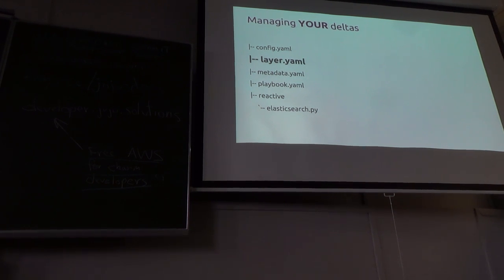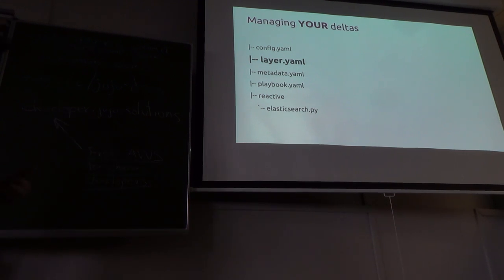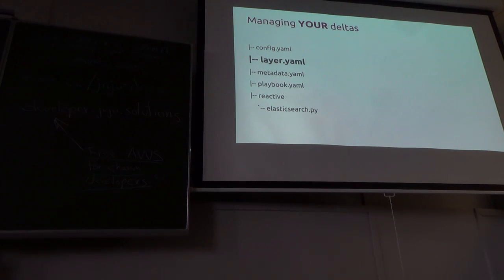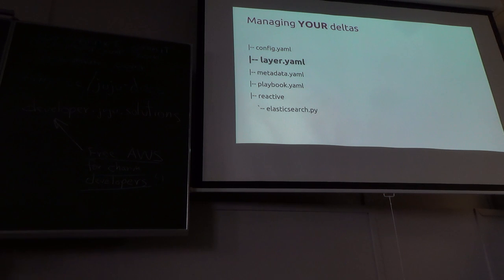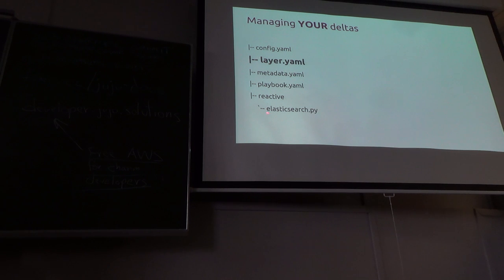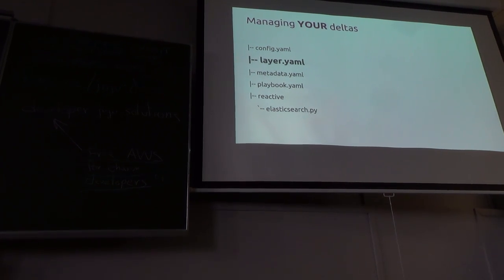Along the vein of managing your deltas, a layer is a fairly skinny directory structure comprised of just a few files. There's the layer.yaml, which defines where to pull in extra resources like an Apache layer or the Ansible layer. There's a config.yaml defining application configuration, a metadata.yaml defining your charm, a playbook.yaml for Ansible heavy lifting, and a reactive module — in this case elasticsearch.py. With this high-level map, let's dive deep and assemble a charm powered by Ansible.